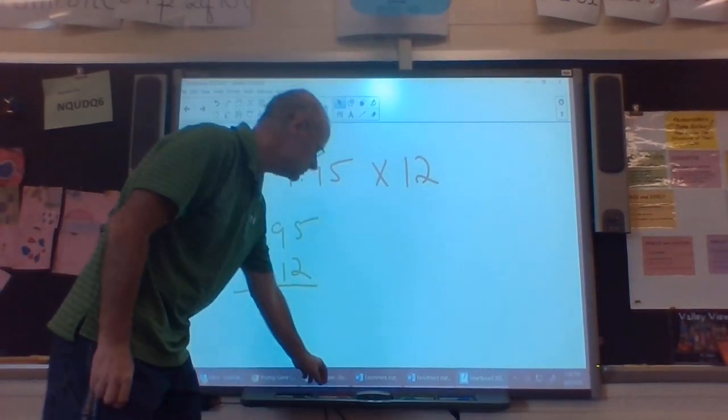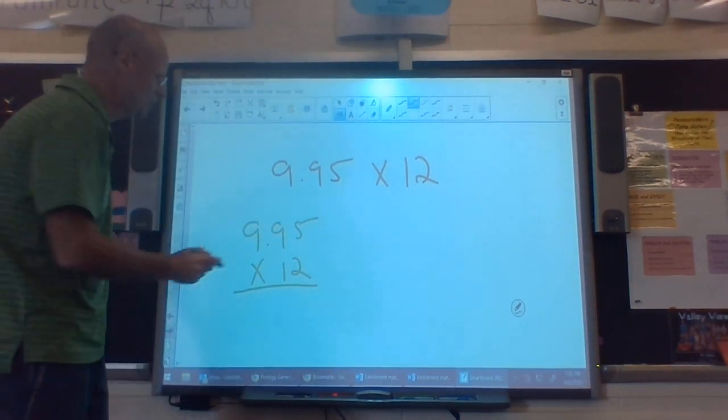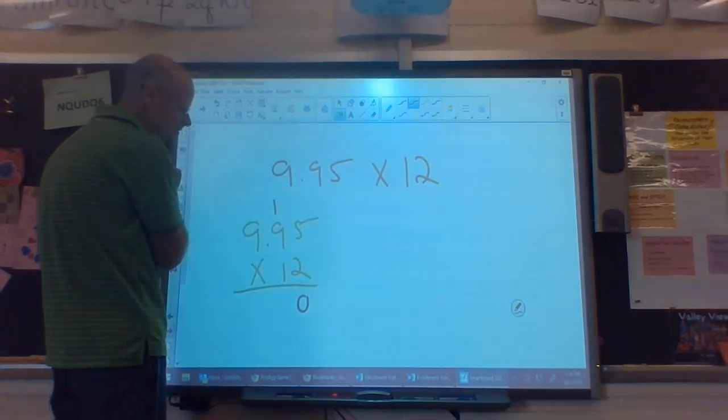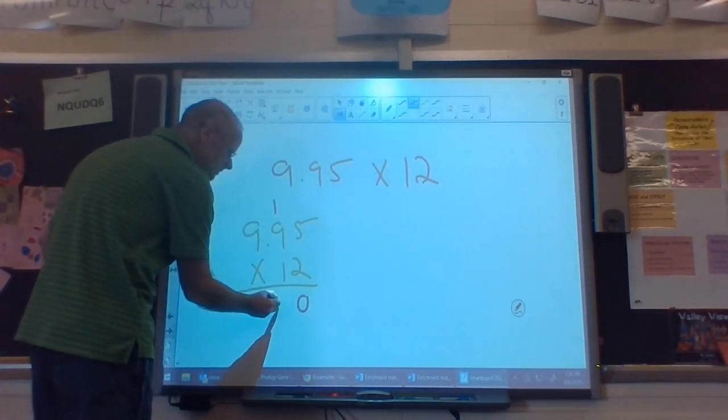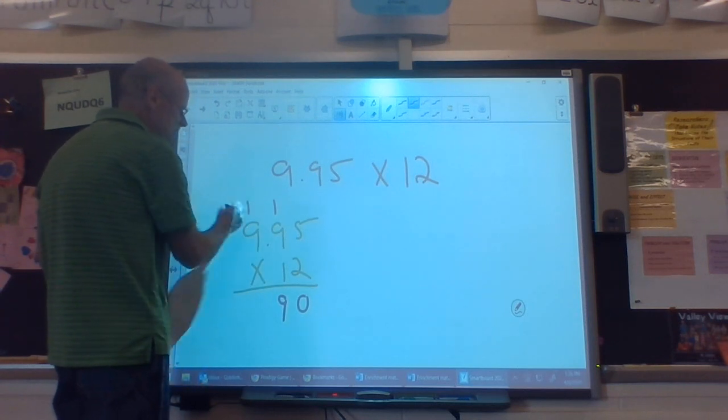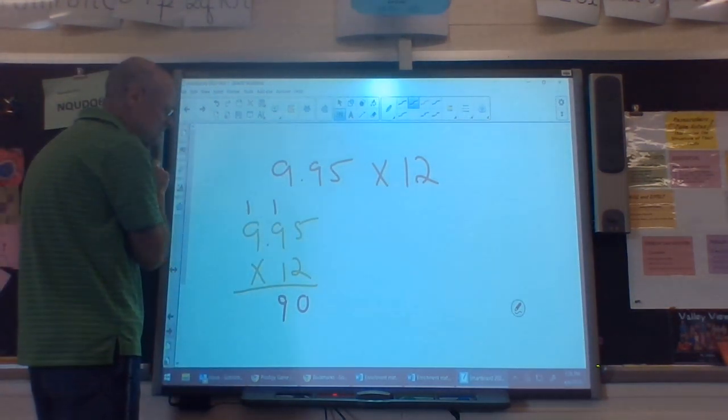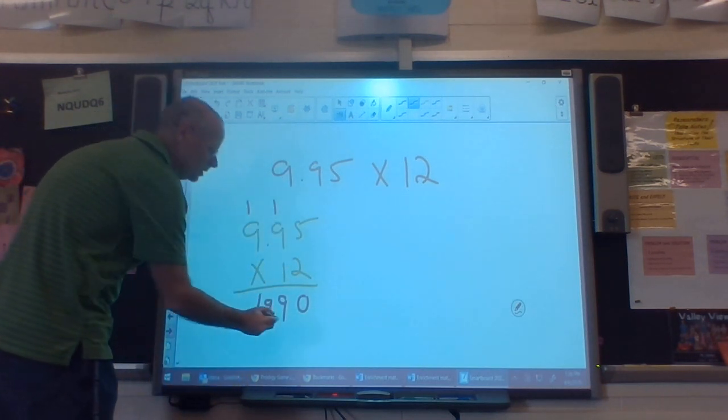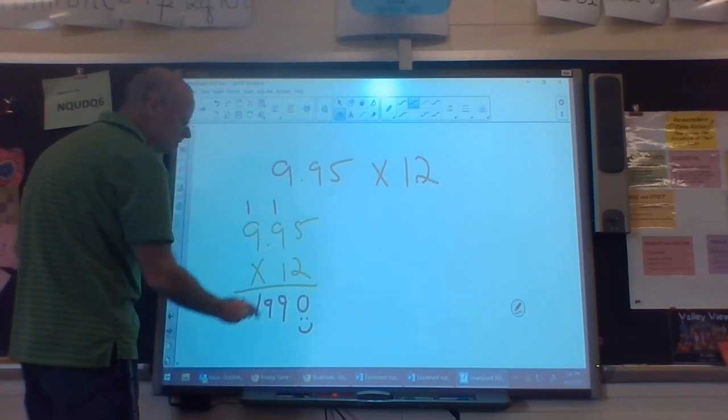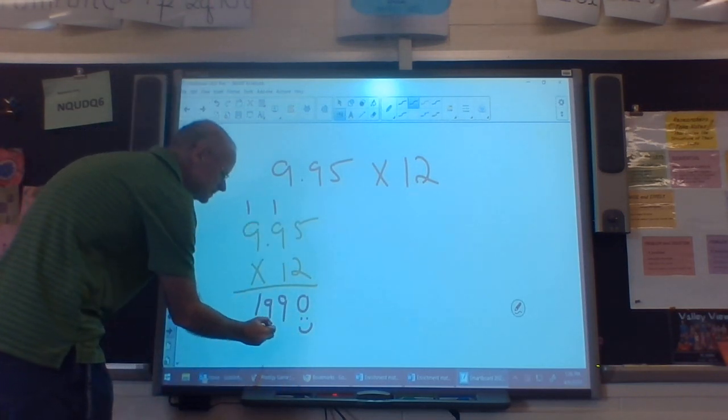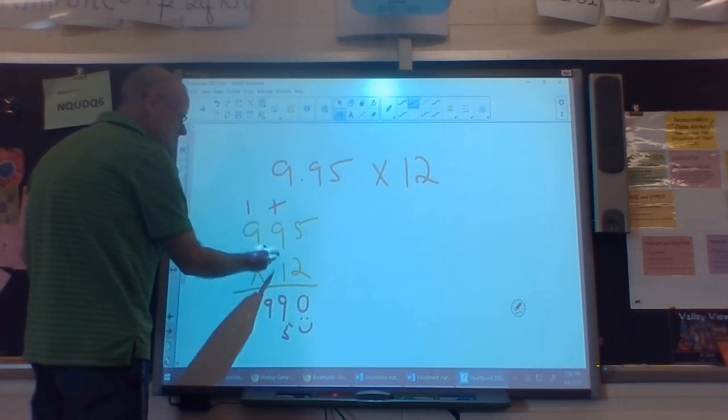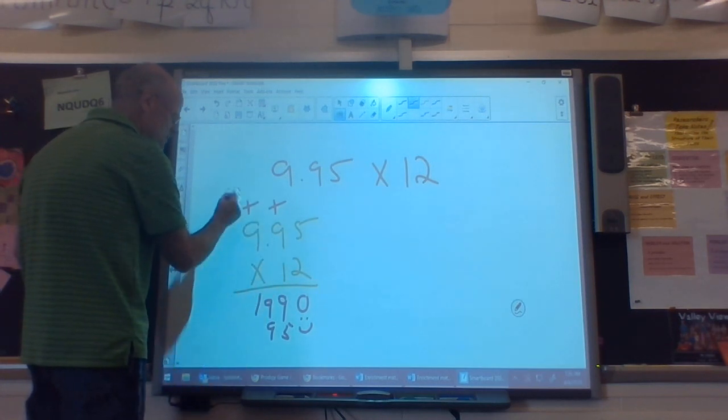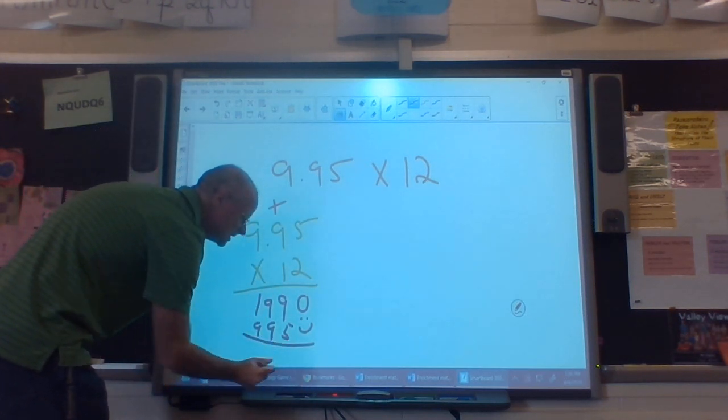This problem, I'm just going to work out standard algorithm with you. 2 times 5 is 10. Put down my 1s. Carry my 10s. 2 times 9 is 18, plus 1 is 19. I'm going to just not worry about the decimal point. I'm going to carry my 1. 2 times 9 is 18, plus 1 is 19. Now I have to multiply by my 1. I have to keep that placeholder, my friend Waldo. 1 times 5 is 5. 1 times 9 is 9. 1 times 9 is 9. Now I just have to add.